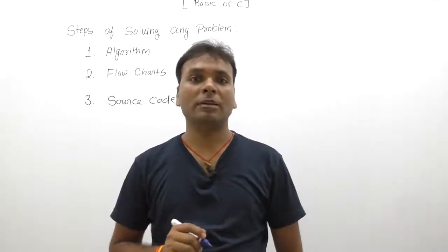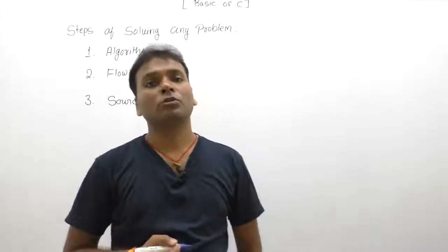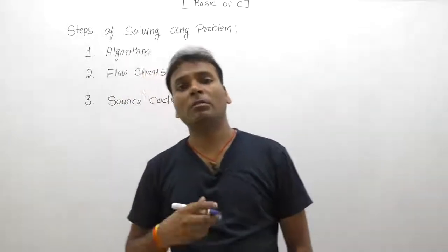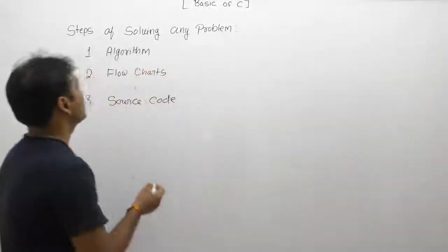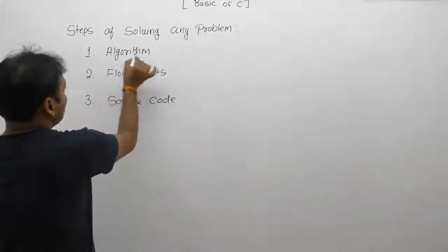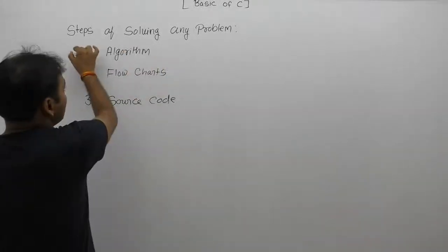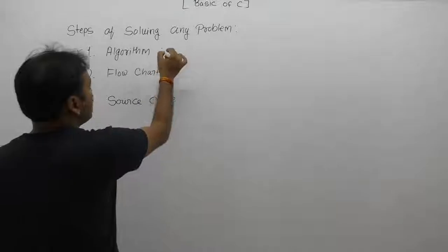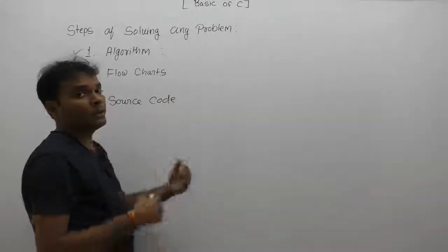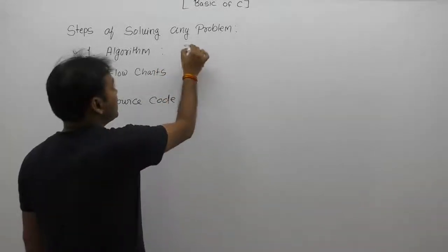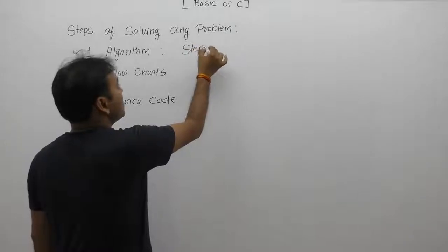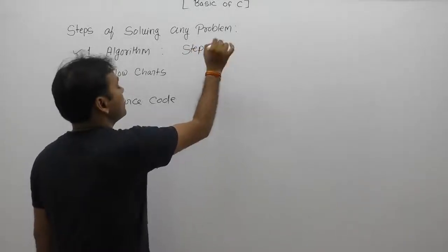After that, flowchart diagrams. After that, we write source code. Any problem solution is completed in three steps. First, algorithm. What is an algorithm? Algorithm is a solution of any problem step-wise. It is simply a step-wise solution of an assigned problem.